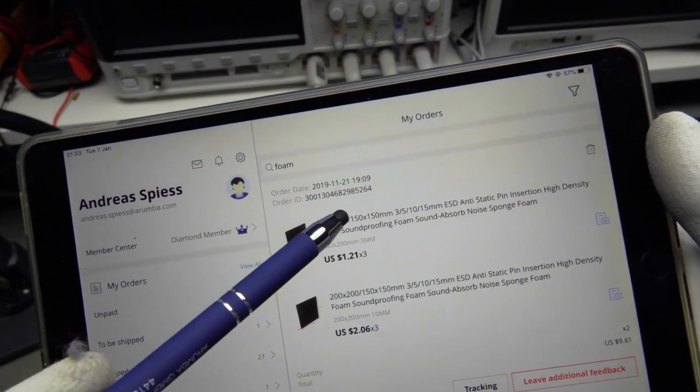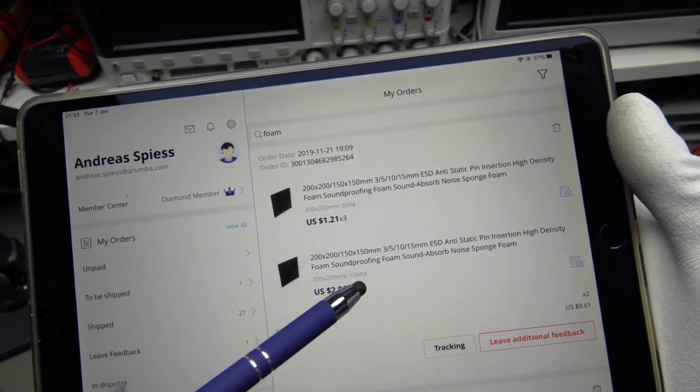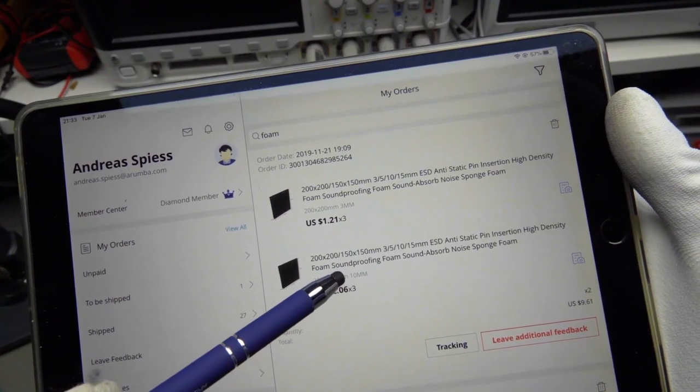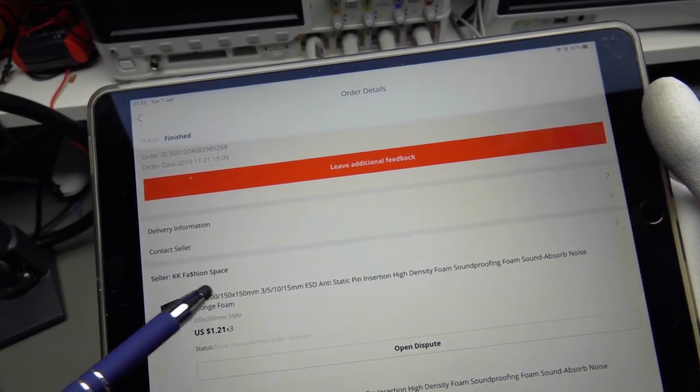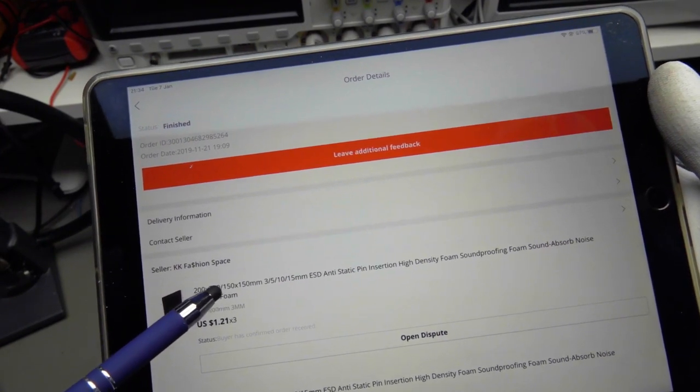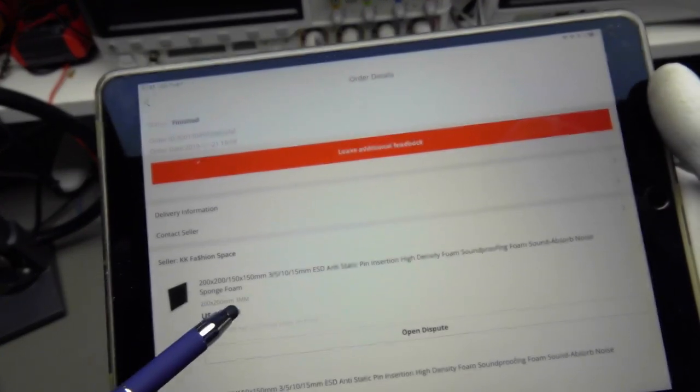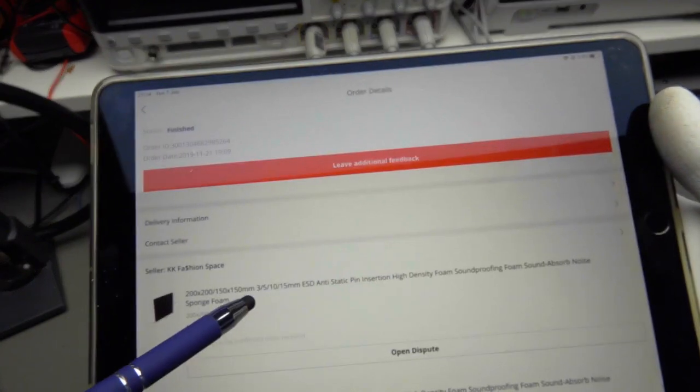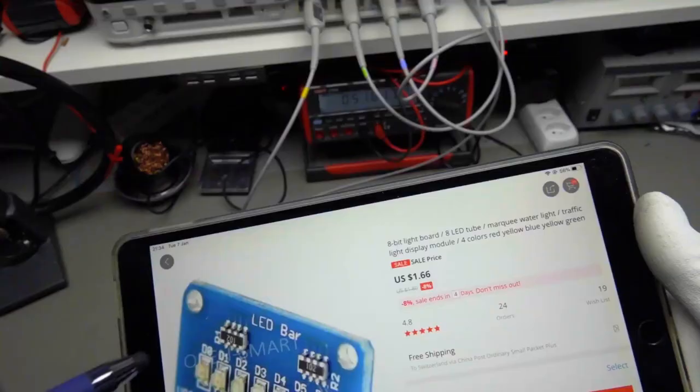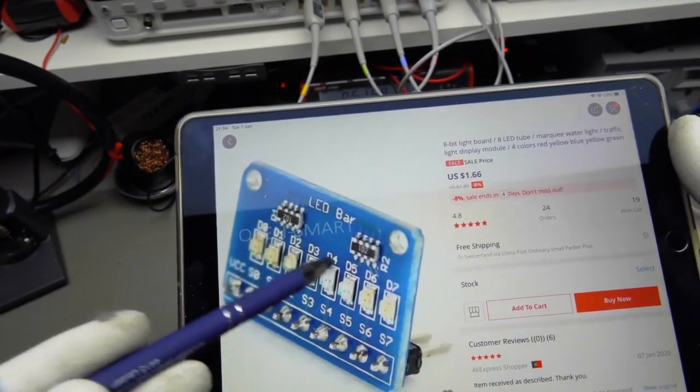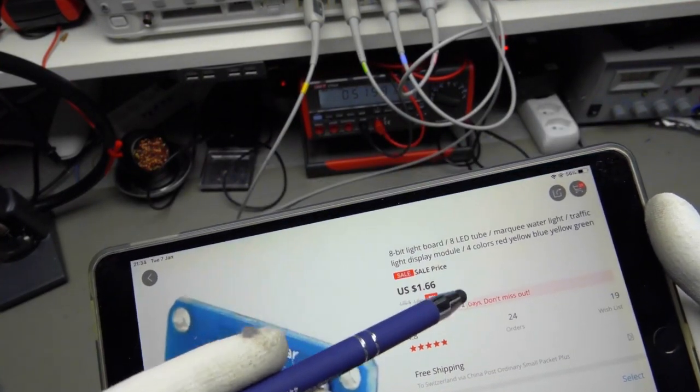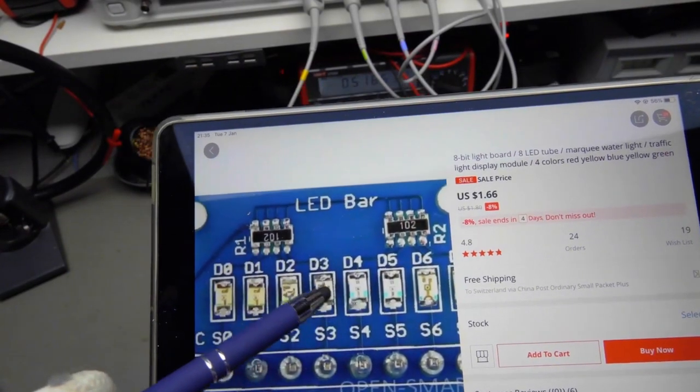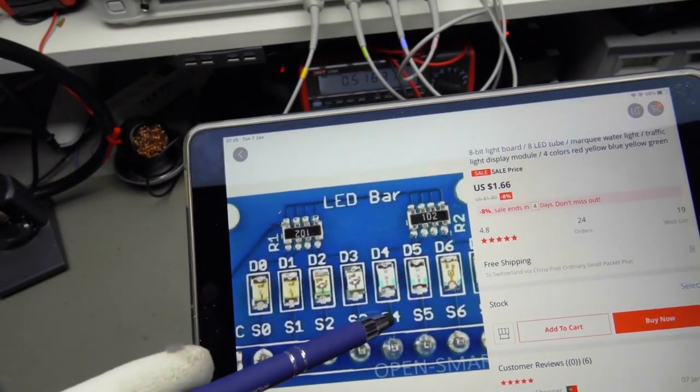Here you have the listing of the foam. The 3mm and the 10mm. The 3mm is $1.21 and the 10mm is $2.06 for one sheet. And the one sheet is not too bad. You can store quite a lot of small components with one sheet. I ordered here three of them and now I'm really happy with it. I do not think I have to reorder in the next few months. This is the listing of these 8-bit LEDs. They cost $1.66. This is really not a lot. You see here four colors for eight LEDs. And we will see them in our project in one of the next videos.